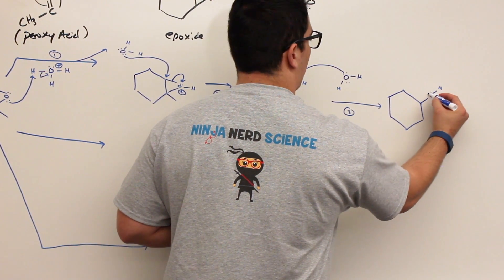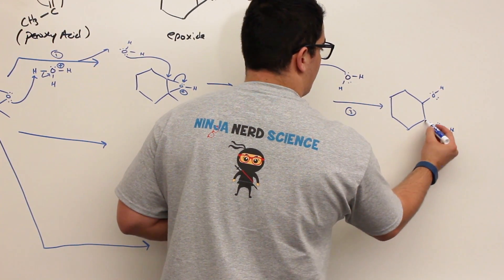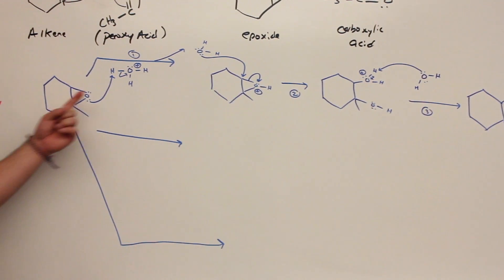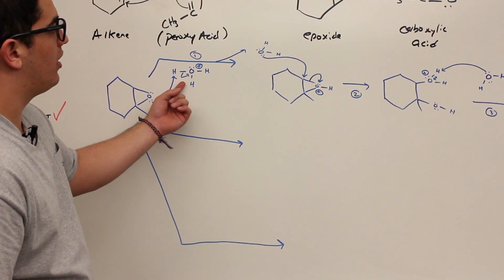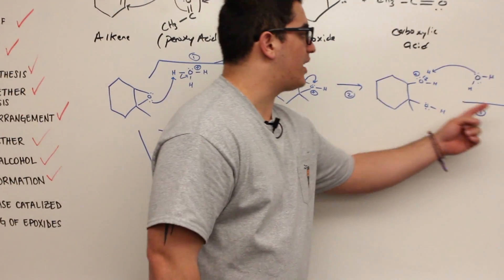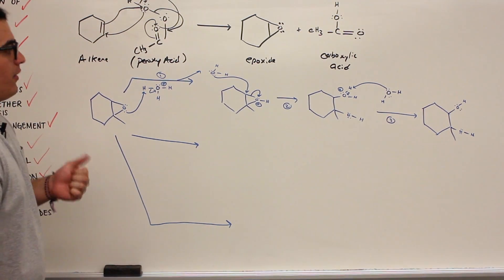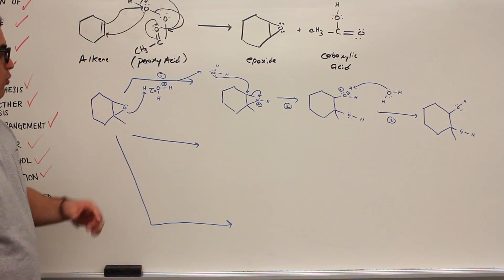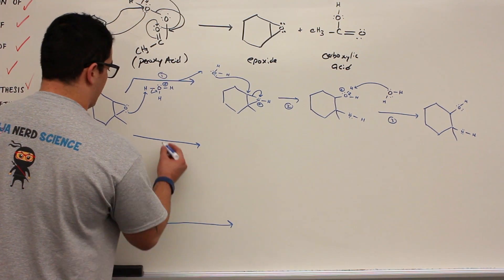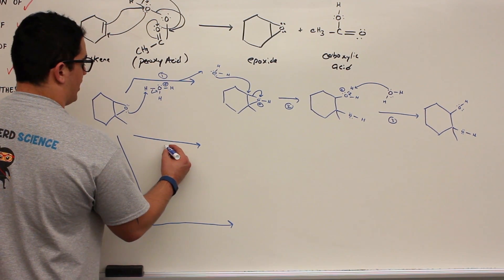So what's the result of this reaction? A diol. We took an epoxide and did an acid-catalyzed hydration, basically converting it into an alcohol — a 1,2-diol. Alright, that's the first reaction. Let's do another one — let's do it with a binary acid, with hydrochloric acid, HCl.